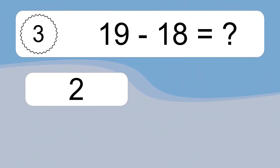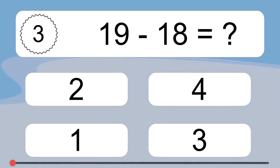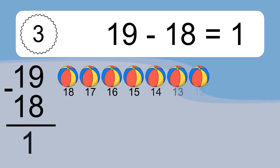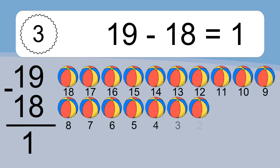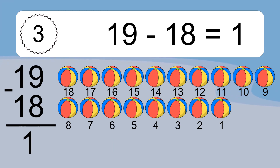19 minus 18 equals what? 19 minus 18 equals 1. Let's count it: 18, 17, 16, 15, 14, 13, 12, 11, 10, 9, 8, 7, 6, 5, 4, 3, 2, 1.